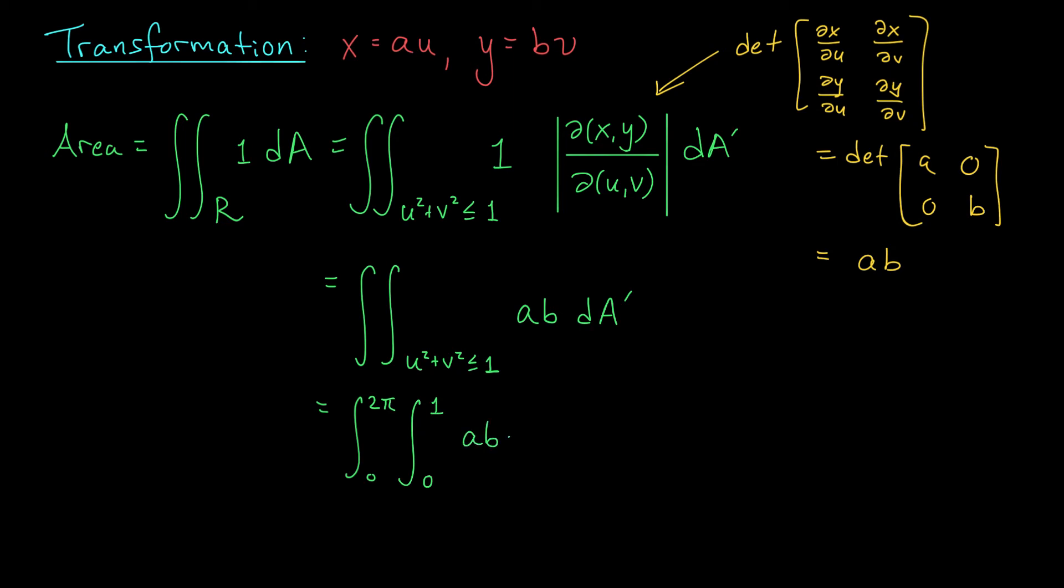I have ab, and then I multiply by my new area factor, rho d rho d phi. From here, we could pull out the constants a and b from our integral, and then we could separate the integral into a phi integral times a rho integral. That'll give us ab times the integral from zero to two pi d phi, times the integral from zero to one of rho d rho. At this point, folks, both of our integrals are very straightforward to evaluate.